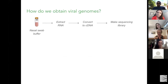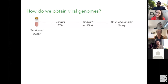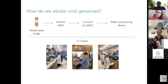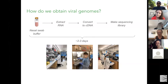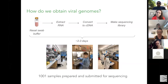For those less familiar with viral genomes and sequencing, here's how we get from a sample in a tube to these phylogenetic trees. Most of what we have is coming from nasal swabs in buffer — the typical sample collected for diagnostic purposes. We extract RNA from these samples, since this is an RNA virus, convert the RNA into DNA, and make sequencing libraries from this DNA. This whole process takes around two to three days. People at the Broad have been working in shift patterns, and though we're not a production-level facility, we've really scaled up our capacities over this time. In total, we have now 1,001 samples prepared and submitted for sequencing.